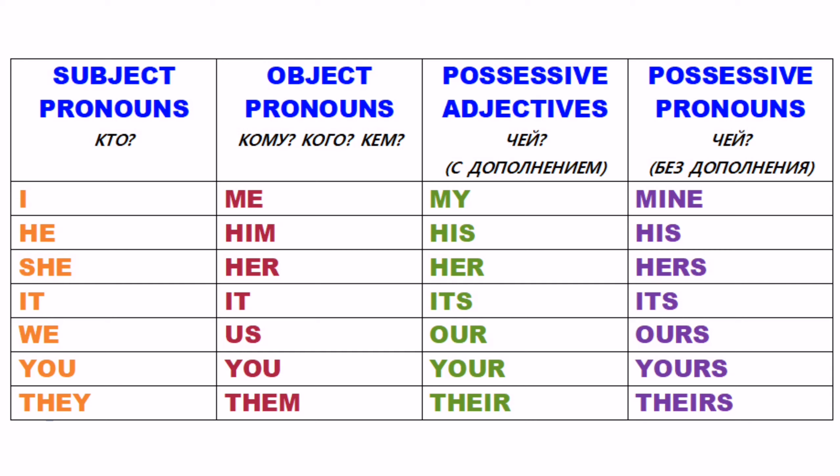Следующая, третья колонка — possessive adjectives, притяжательные прилагательные. Это всё, что отвечает на вопрос «чей», «чья», «чьё» — только принадлежность. Чтобы сказать «моё», «моя», «мои» — это всё my. Чтобы сказать «его» (что-то ему принадлежит) — это his. Не путайте: him тоже переводится как «его», но отвечает на вопрос «кого» — например, 'invite him'. А 'his book' — здесь слово «его» отвечает на вопрос «чья», поэтому это форма his. His — только на вопрос «чья», him — на все остальные вопросы.